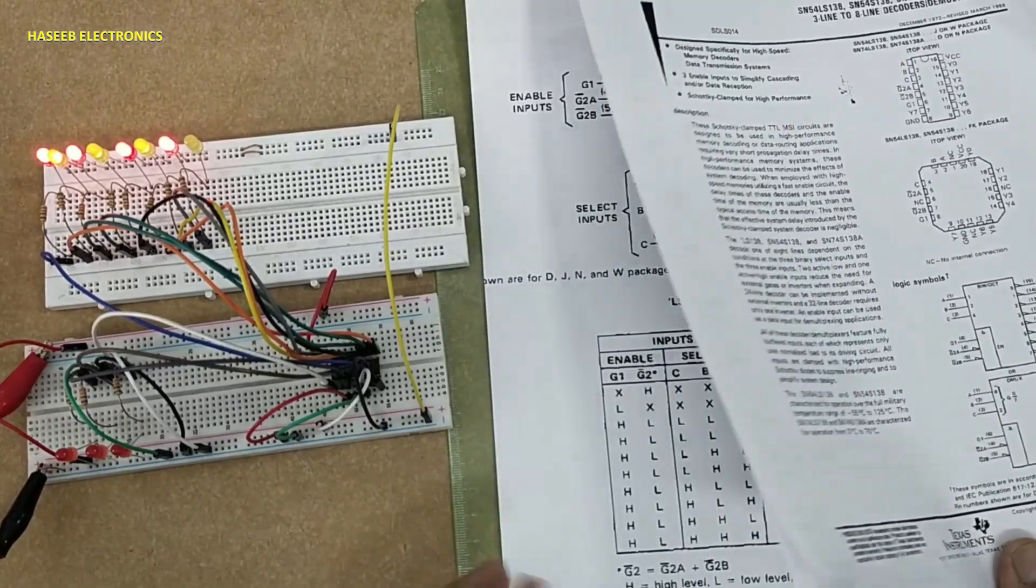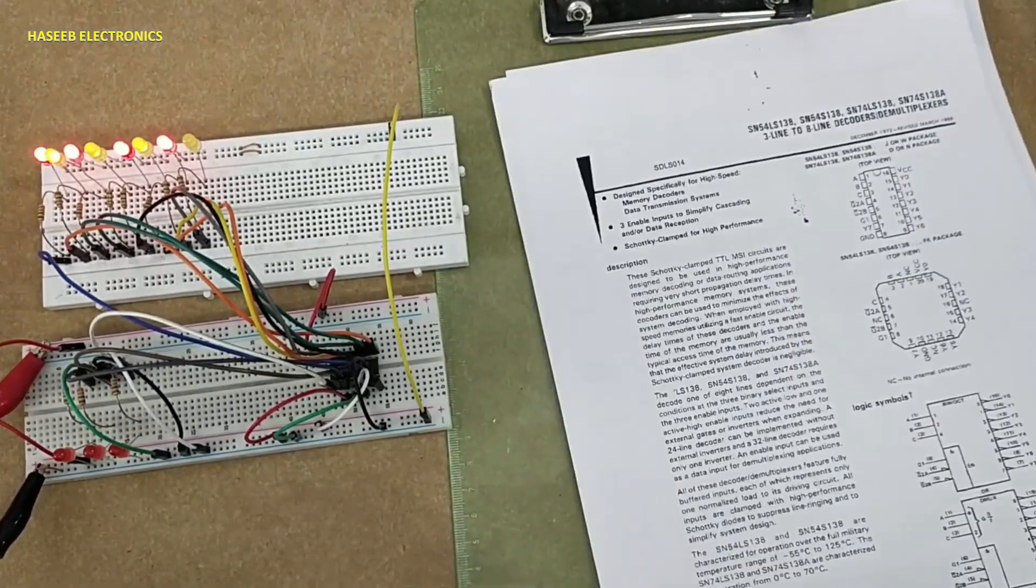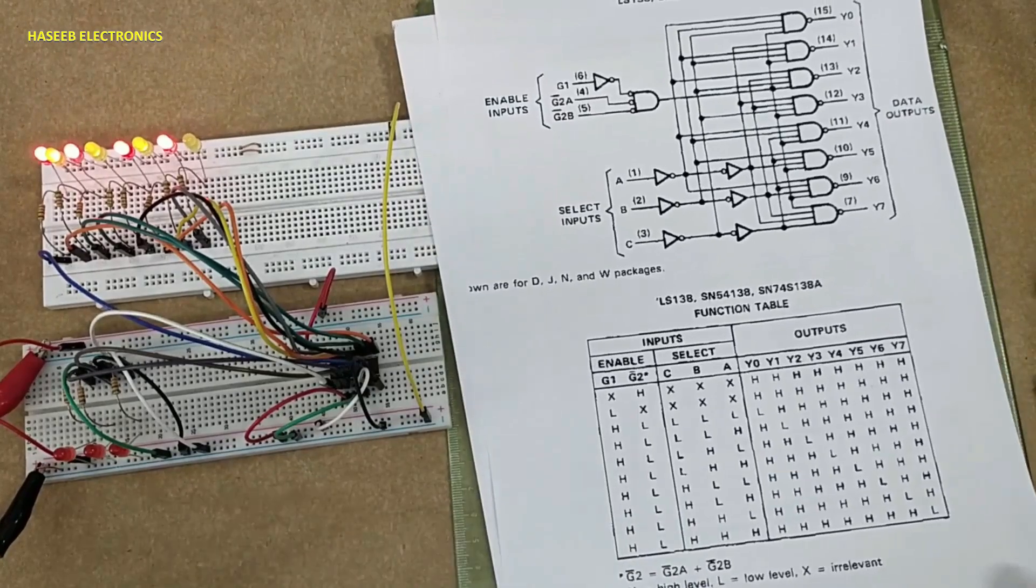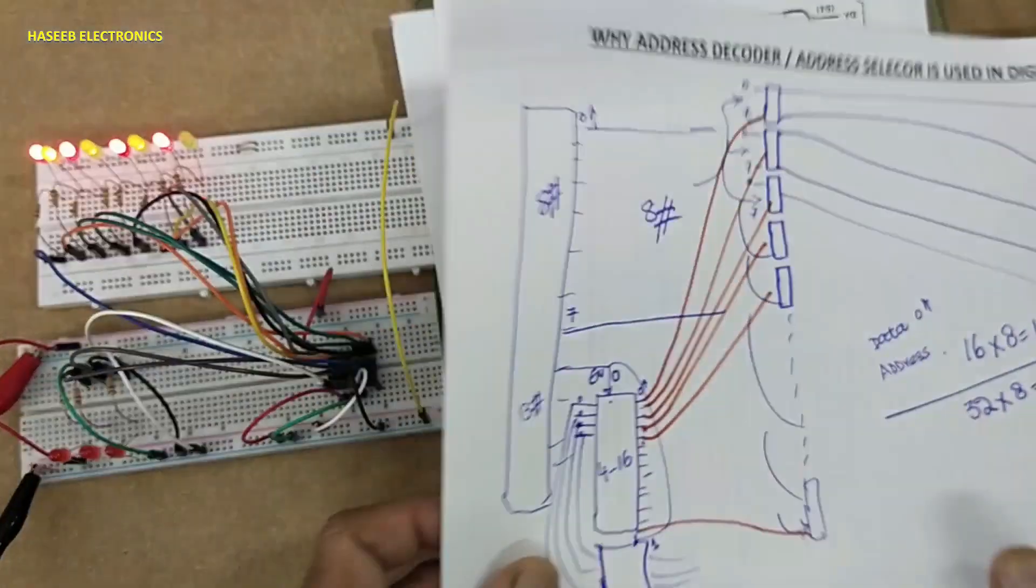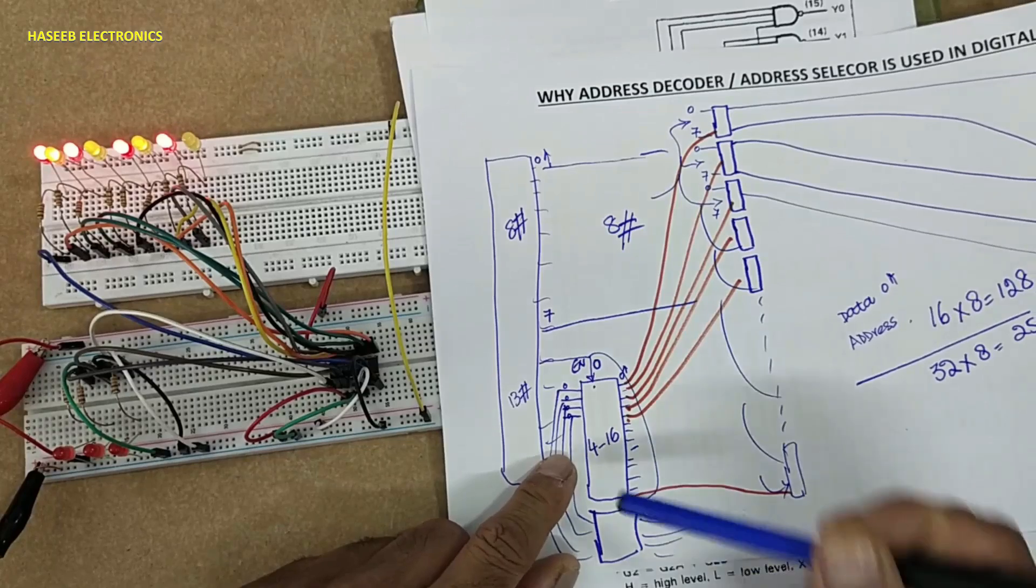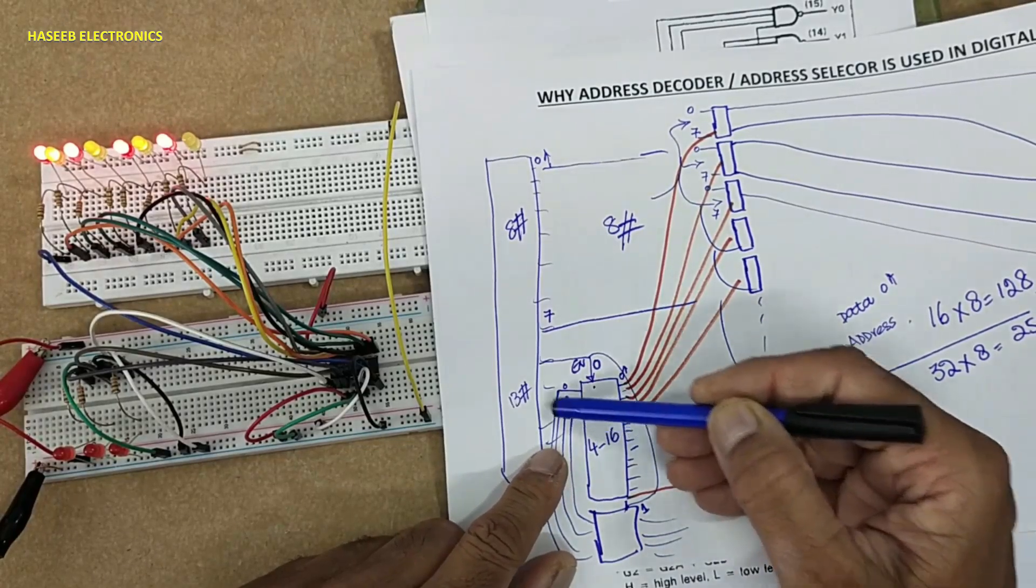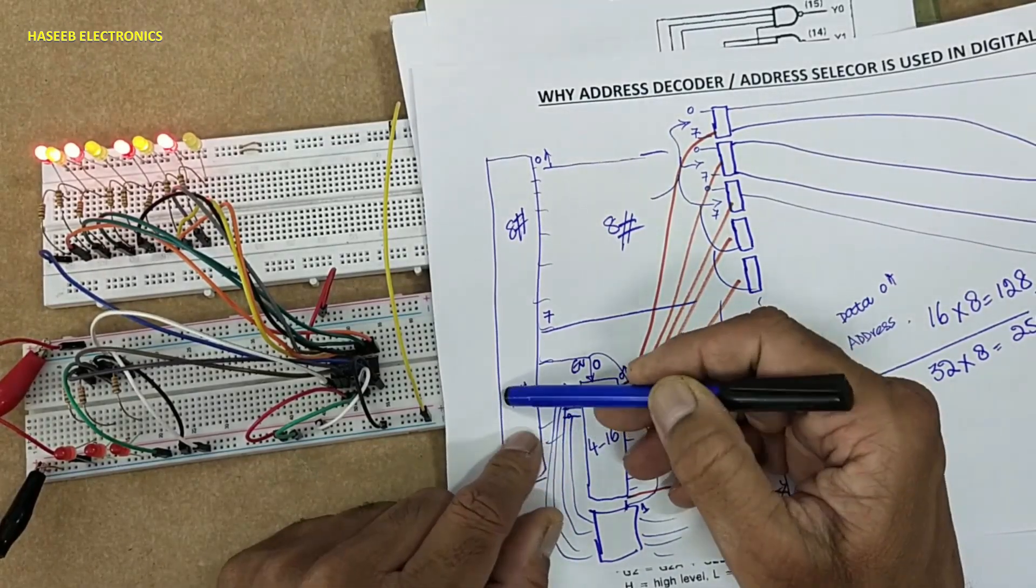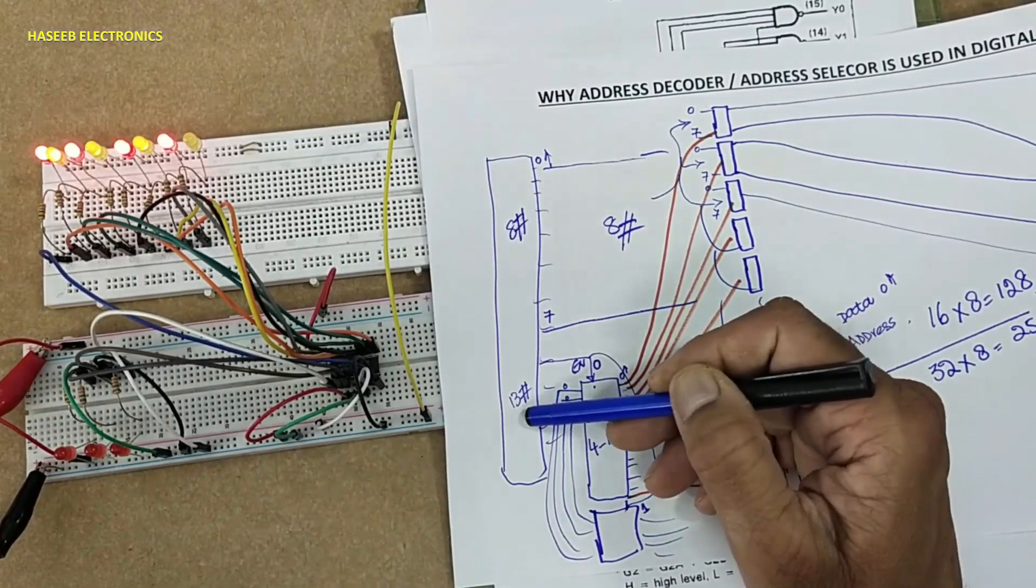In my last video, I discussed how this address selector works. Here is a three-to-eight line address decoder. The microcontroller will provide three-line data.